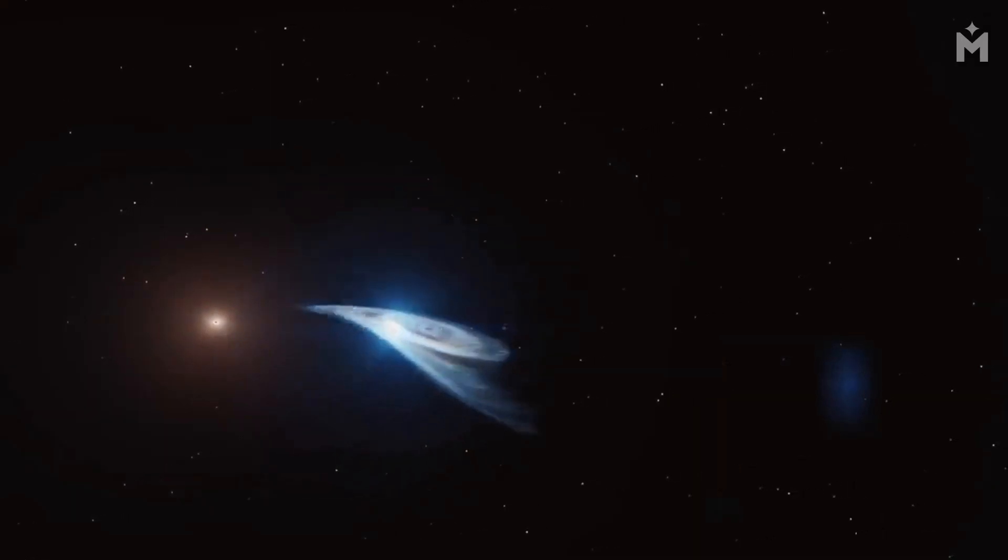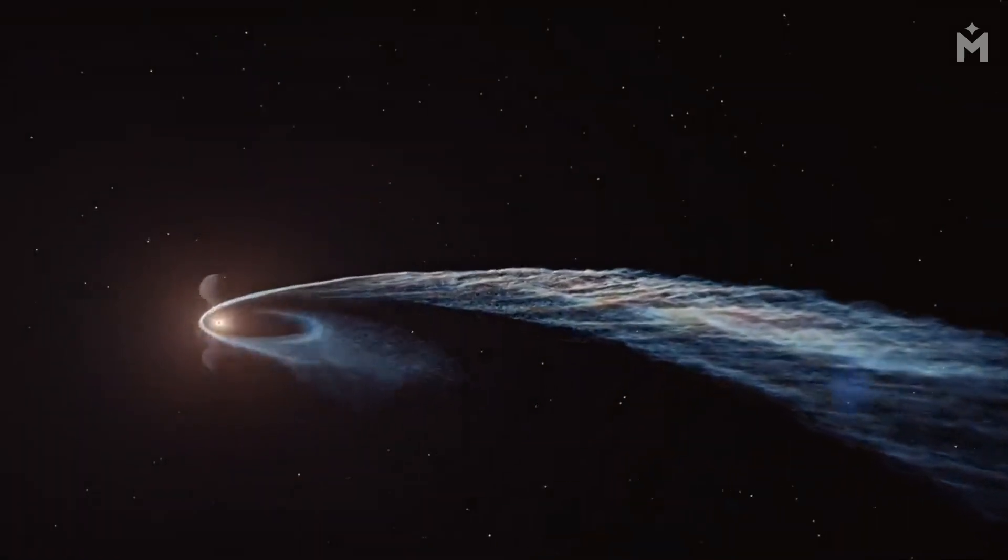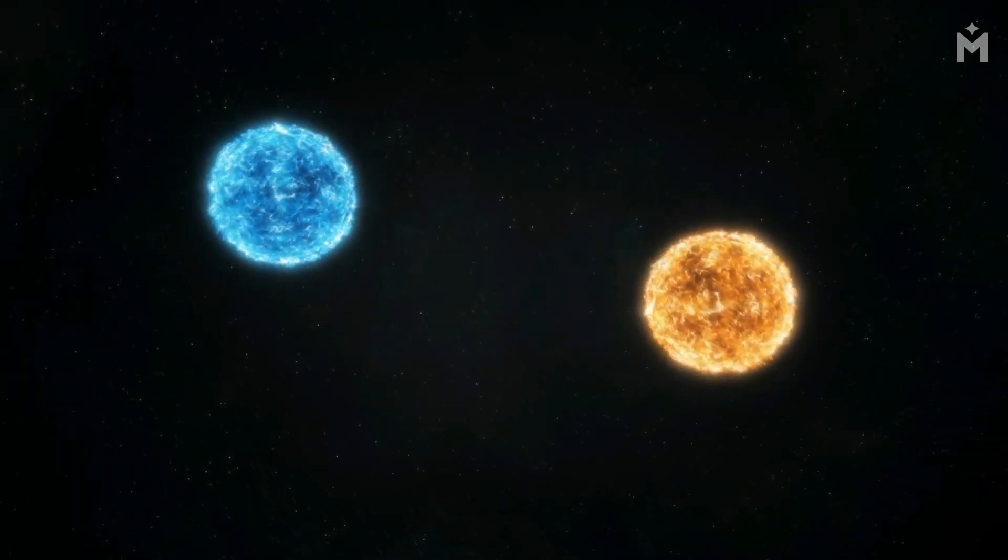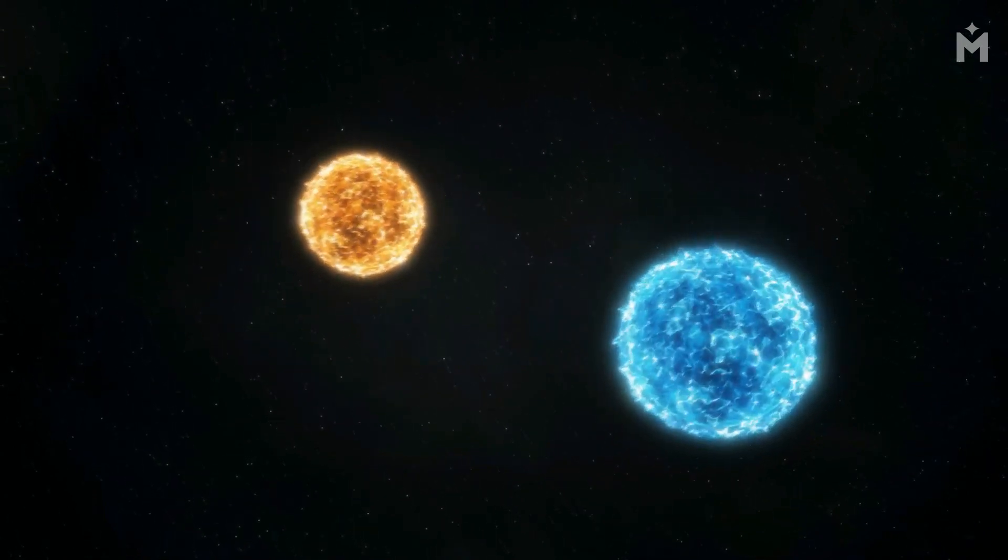There are two ways a star can get too close to a black hole. The first is if the star wanders too close to the black hole while it is orbiting the center of the galaxy. The second is if the star is part of a binary system and its companion star wanders too close to the black hole.